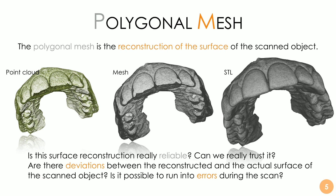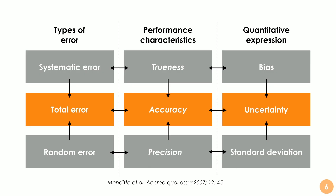The question is: is this surface reconstruction really reliable? Can we trust it? Is it accurate enough, or are there deviations between the reconstructed and the actual surface? This is the most important question. Is it possible to run into errors during the scan? The answer is yes — we have several kinds of possible errors. We have a systematic error, and trueness is the estimate of the systematic error. We also have random error, and precision is the estimate of the random error. Together, trueness and precision give the final accuracy — the total error of the device.